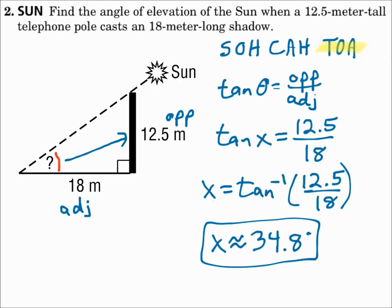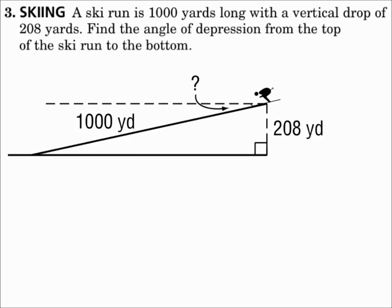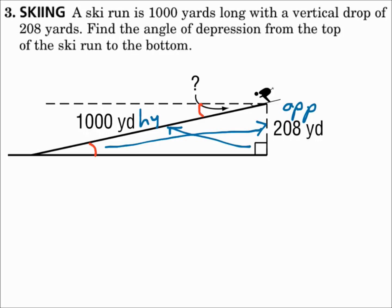Identify the sides. Determine which trig function to use. Substitute in and solve. Number three: a ski run is 1,000 yards long with a vertical drop of 208 yards. Find the angle of depression from the top of the ski run to the bottom. Remember, the angle of depression is congruent to the angle of elevation, and that will give us an angle inside the triangle. Identify the sides as opposite, adjacent, or hypotenuse — the side across from the right angle is the hypotenuse. Will I use sine, cosine, or tangent?